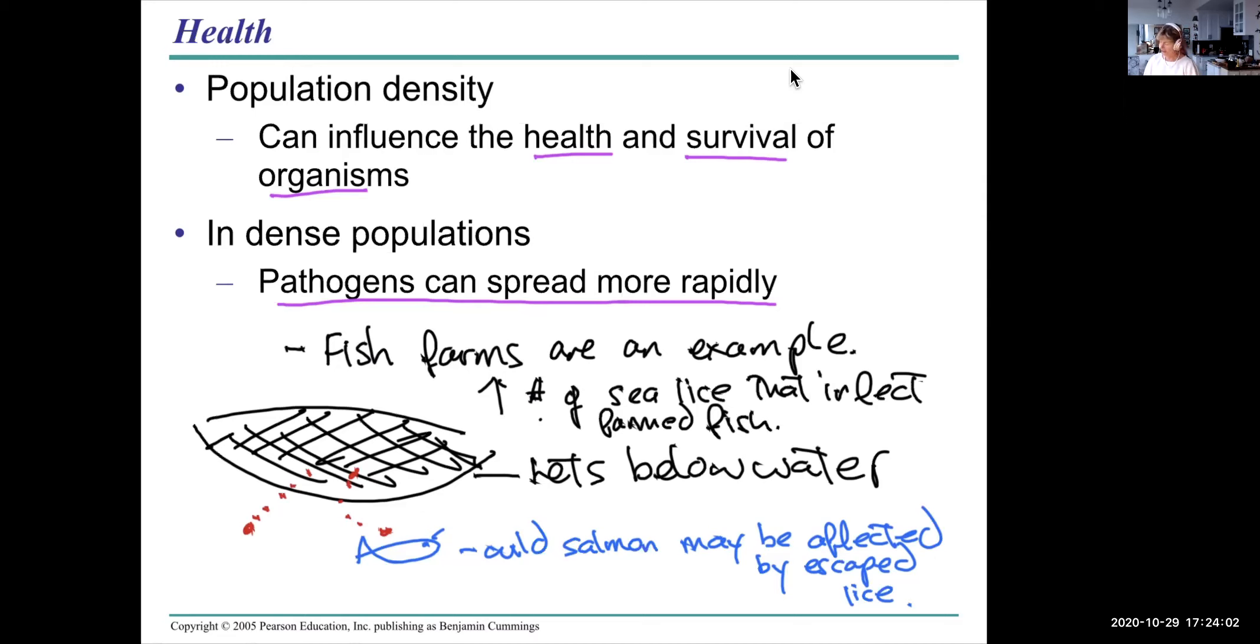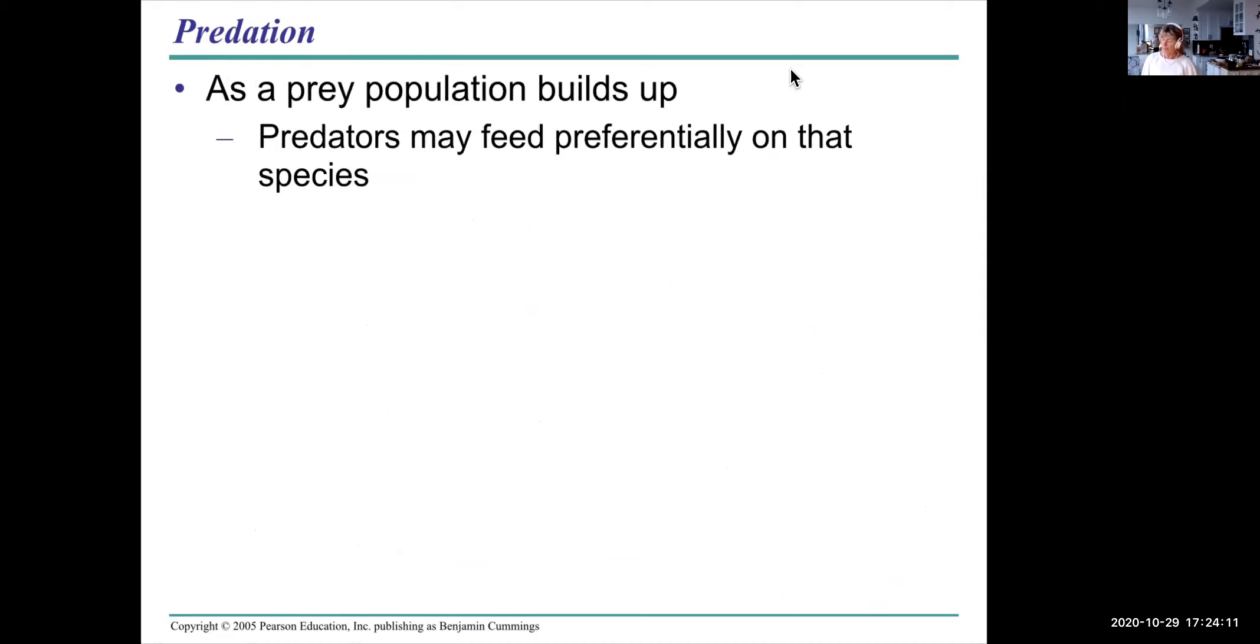Atlantic fish are raised in fish farms. So I stay away from Atlantic fish for that reason. As prey population builds up, predators may switch and feed preferentially on that species. They consume a higher percentage of the individuals of a particular population.